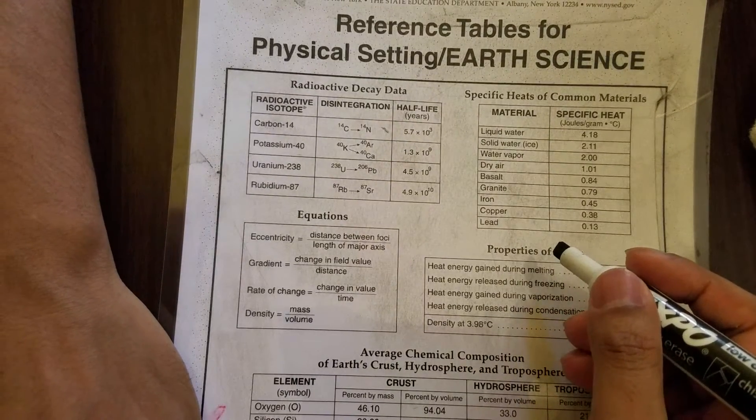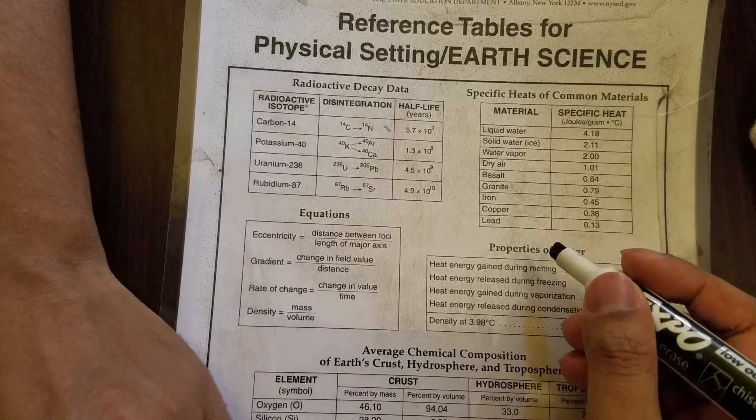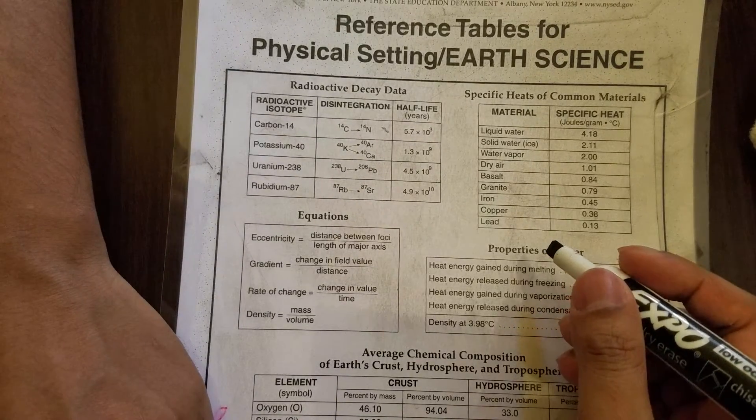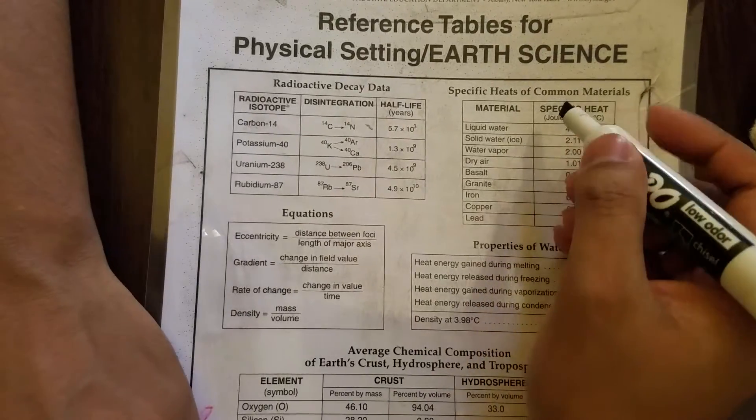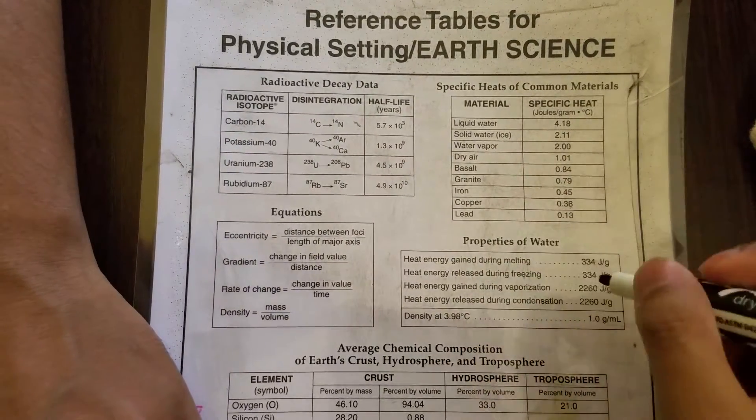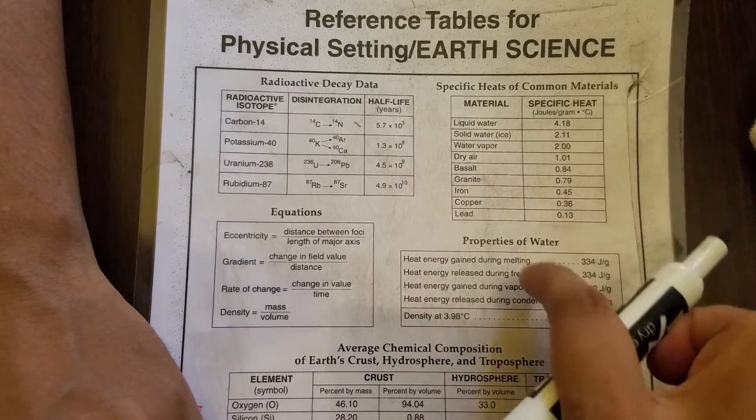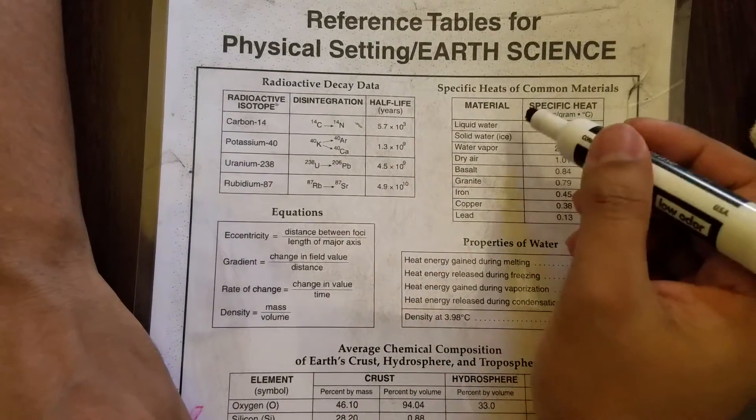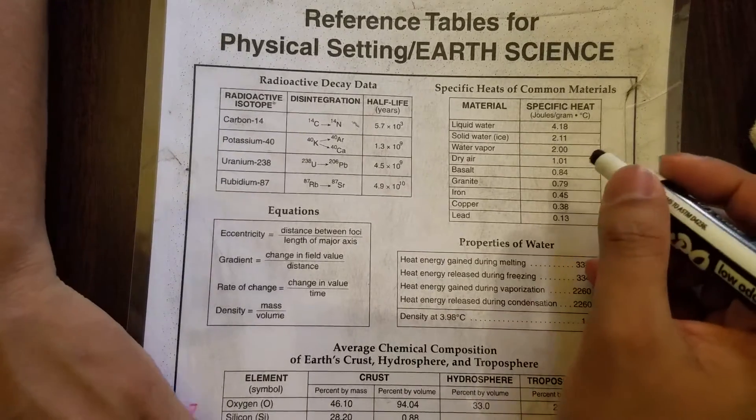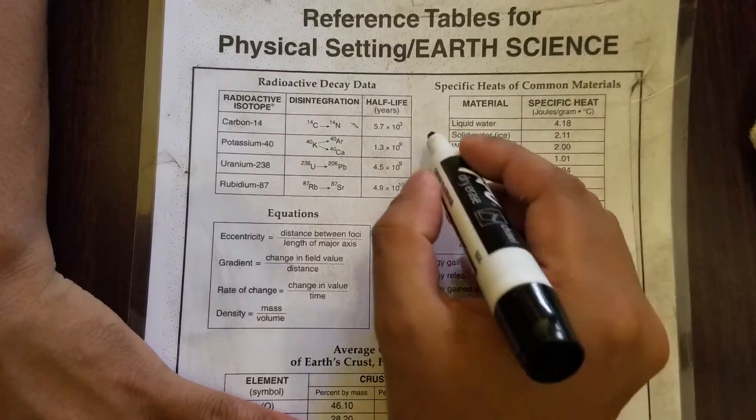Hello everyone, this is the Earth Science Reference Table review tutorial for the Regents exam, and this is the second video. In this video I'll be talking about specific heats of common materials. Yesterday we talked about properties of water, now today we're going to look at specific heat of common materials. So what is specific heat?